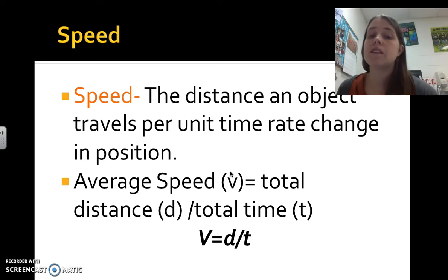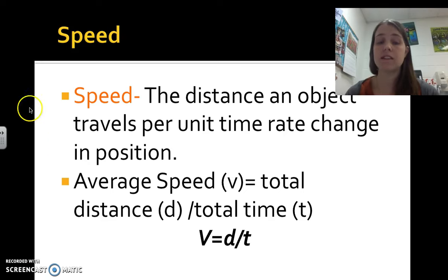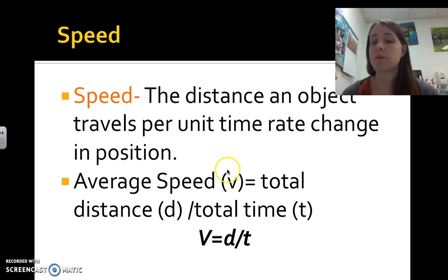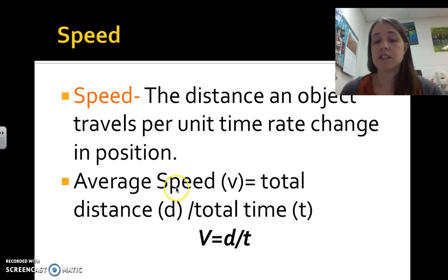Speed is a big calculation we use in physics — it's the distance an object travels per unit time when changing position. Average speed is represented by the variable V, and it equals the total distance D divided by the total time it took.